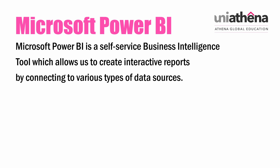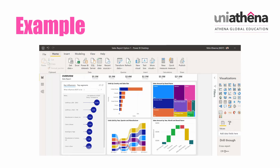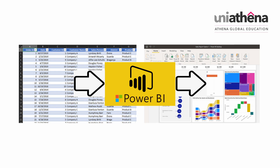Let us understand this deeper with an example. If we present data in a table structure, it will be difficult for human eyes to understand insights about it, as shown in this example. If we represent the data in a graphical format, it would be easier for the human eye to interpret the insights. This is exactly where Power BI comes in handy — it allows us to create this sort of visualization by connecting to different types of data sources.